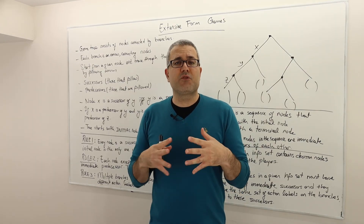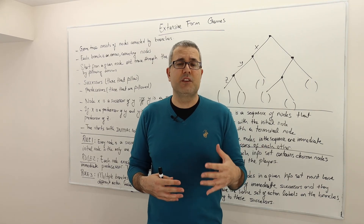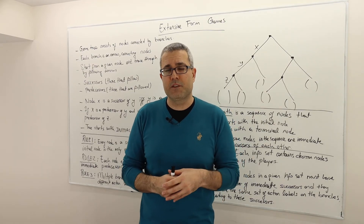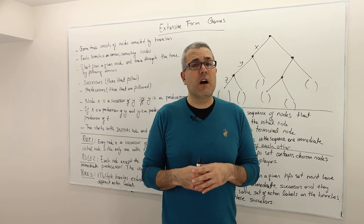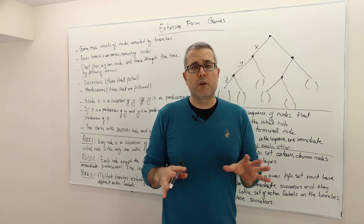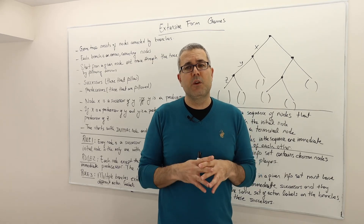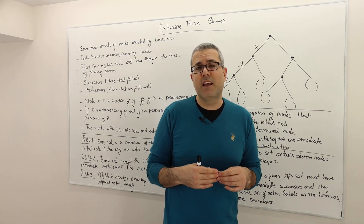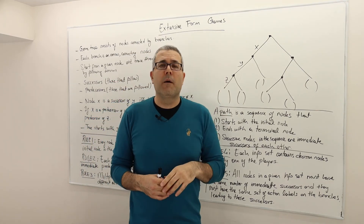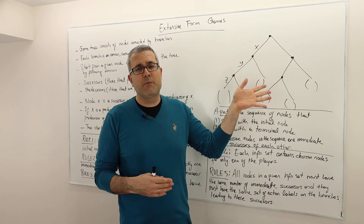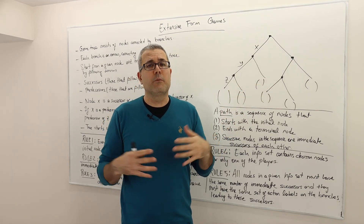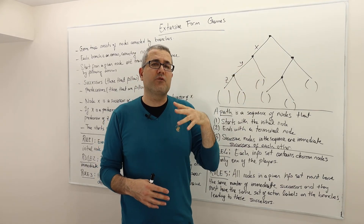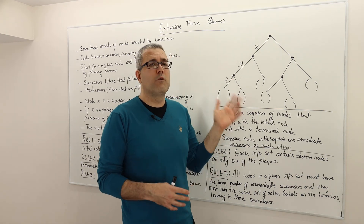We talked about how we write strategies in such games. Remember, a strategy is nothing but a function which maps every information set to an action that is available at that information set. In this episode we are going to make some more definitions. Basically the idea is to clarify what we mean by game tree. We previously learned how to represent a game tree as a normal form or strategic form, but now we are going to look at the extensive form and understand our new solution concepts over game trees.